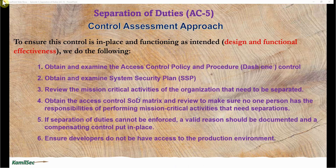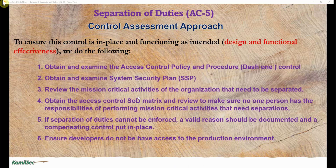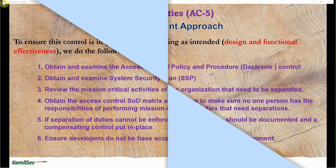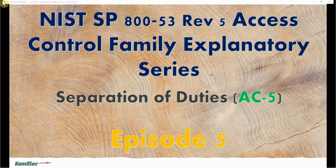Number six: ensure developers do not have access to the production environment. If developers have access to production, they can code something directly into the environment to circumvent any control you may have — so developers having access to production is a no-no. These are the key areas to review when assessing the Separation of Duties control, AC-5. Our next episode will cover AC-6, Least Privilege. If you find this video valuable, please subscribe and hit the like button so the YouTube algorithm can expose these videos to more people.